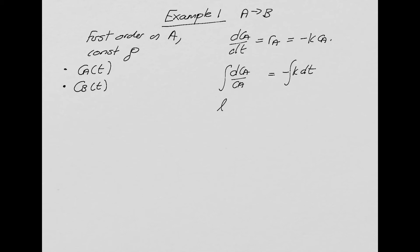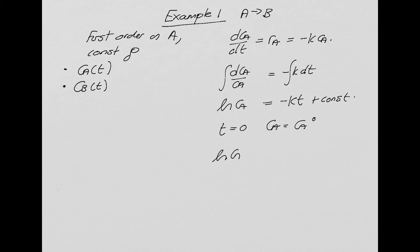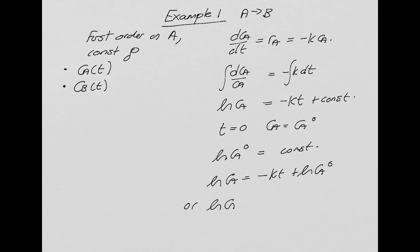The integral of 1/CA is ln CA. The integral of −k dt gives −kt plus an integration constant. The initial condition is that at t = 0, CA = CA0, so ln CA0 equals the integration constant. Substituting, we get ln CA = −kt + ln CA0, or ln(CA/CA0) = −kt. So CA = CA0·exp(−kt).